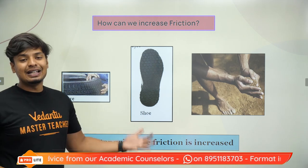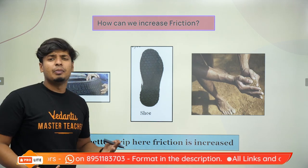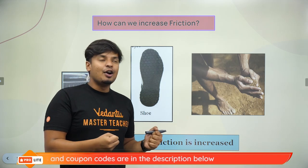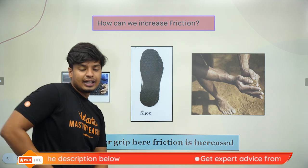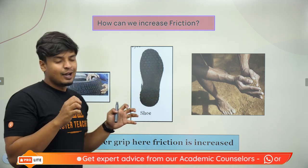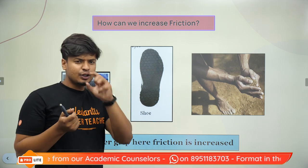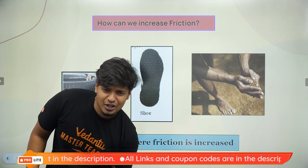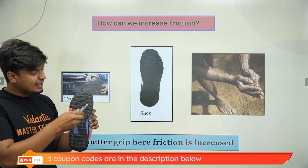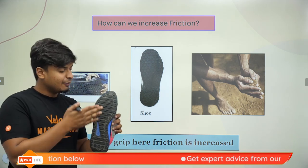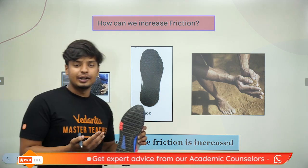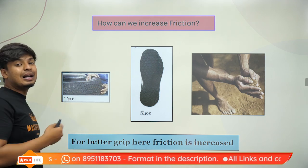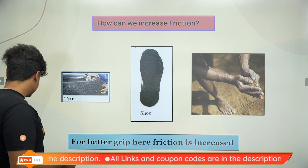Can we increase friction? Yes — for better grip, friction is increased. For example, people playing tug of war apply sand on their hands to make them rougher. Rock climbers apply chalk powder before climbing for better grip. Shoes have nice grooves on the soles to provide better grip — if the sole was smooth, you couldn't walk properly. Similarly, tires also have grooves for better grip on the road. We increase friction by making the surface rough.